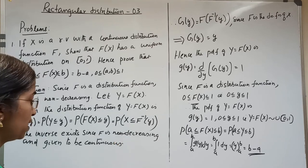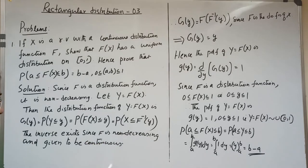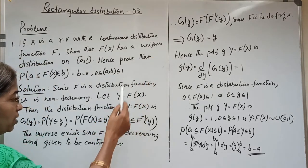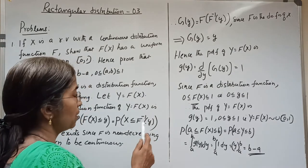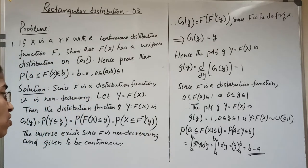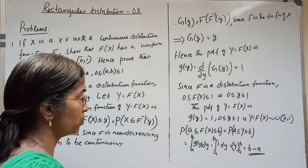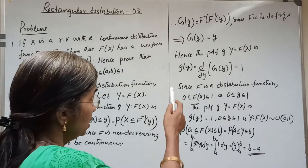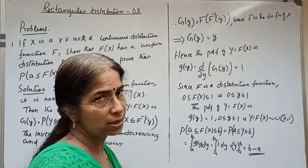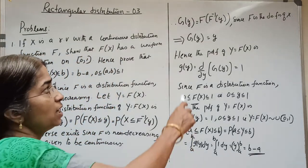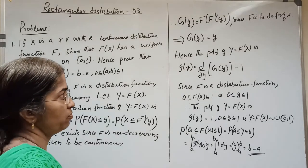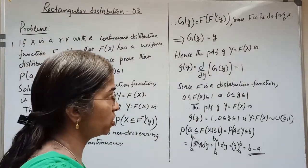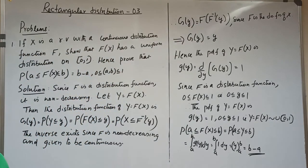The inverse exists since f is non-decreasing and it is given to be continuous. Hence we can write G(y) = F(F⁻¹(y)), where F is the distribution function, that is F(x) = P(X ≤ x). So we get F(F⁻¹(y)) = y, that is G(y) = y. Hence the PDF of Y = F(X) is obtained.